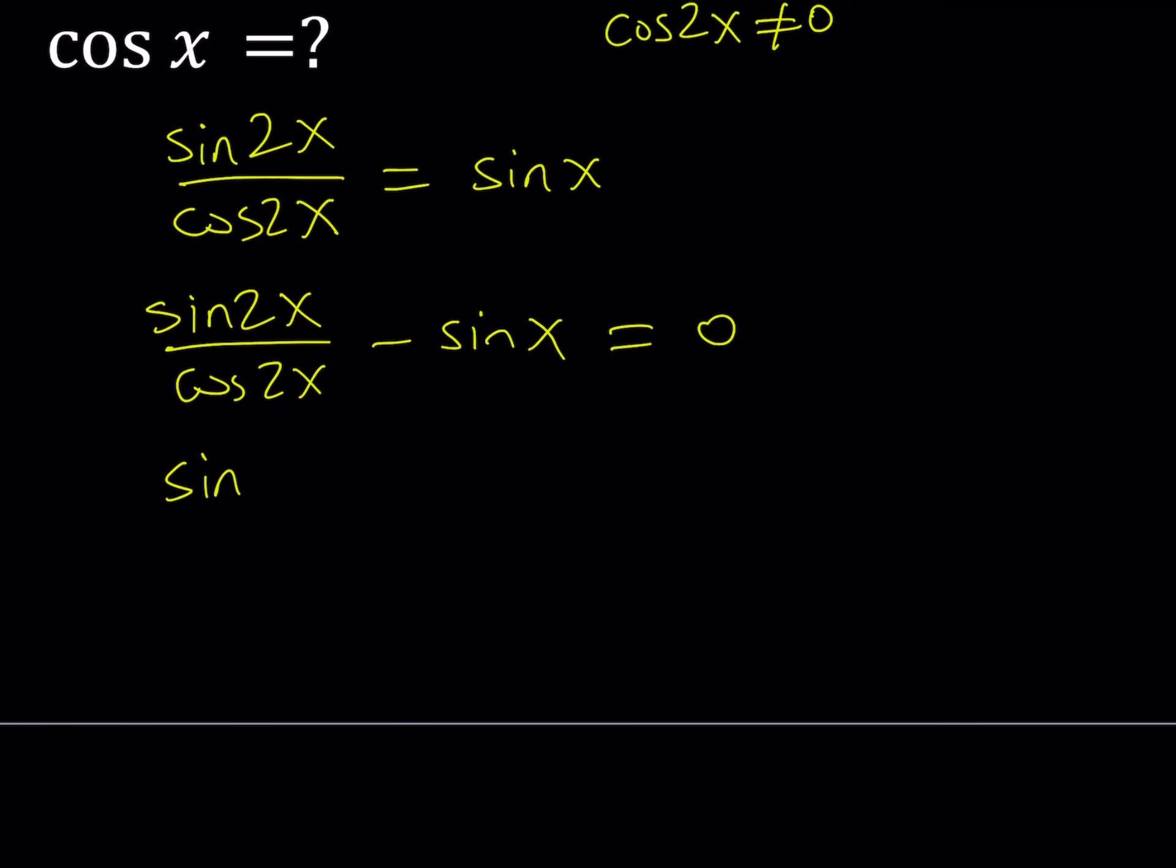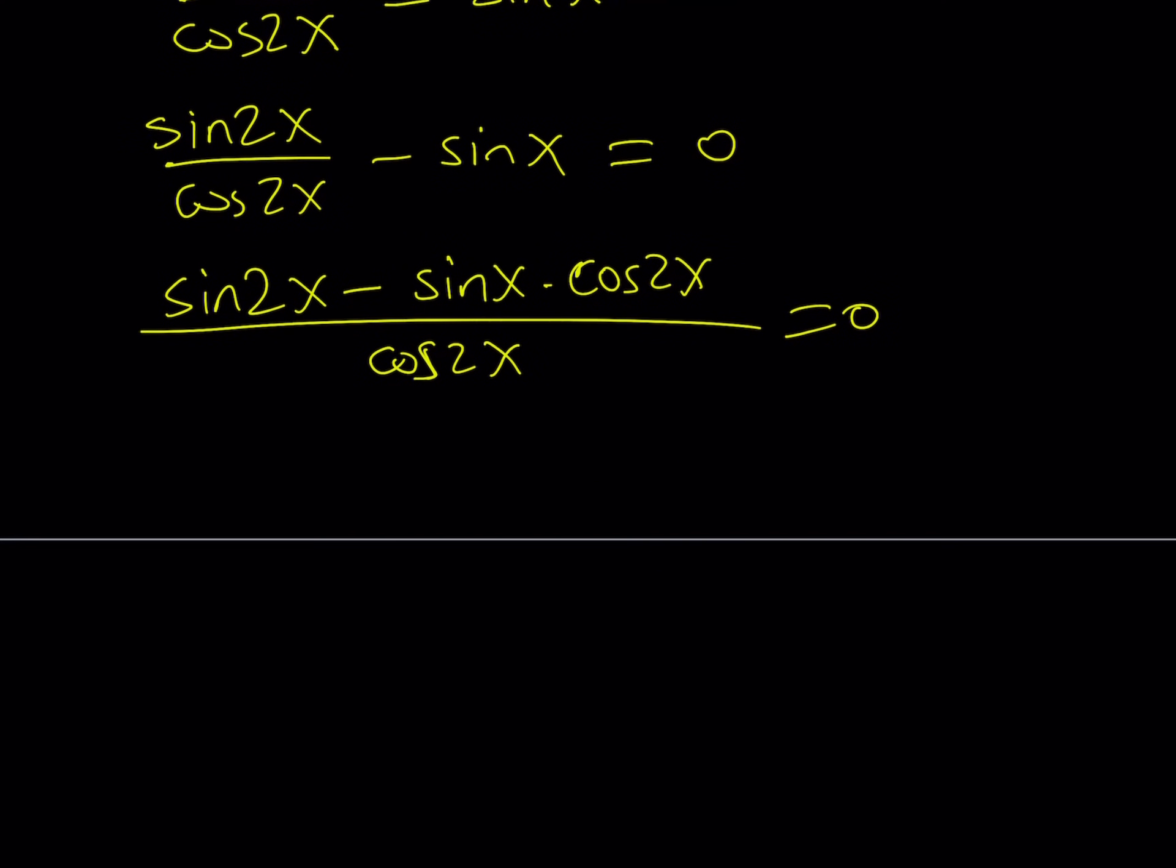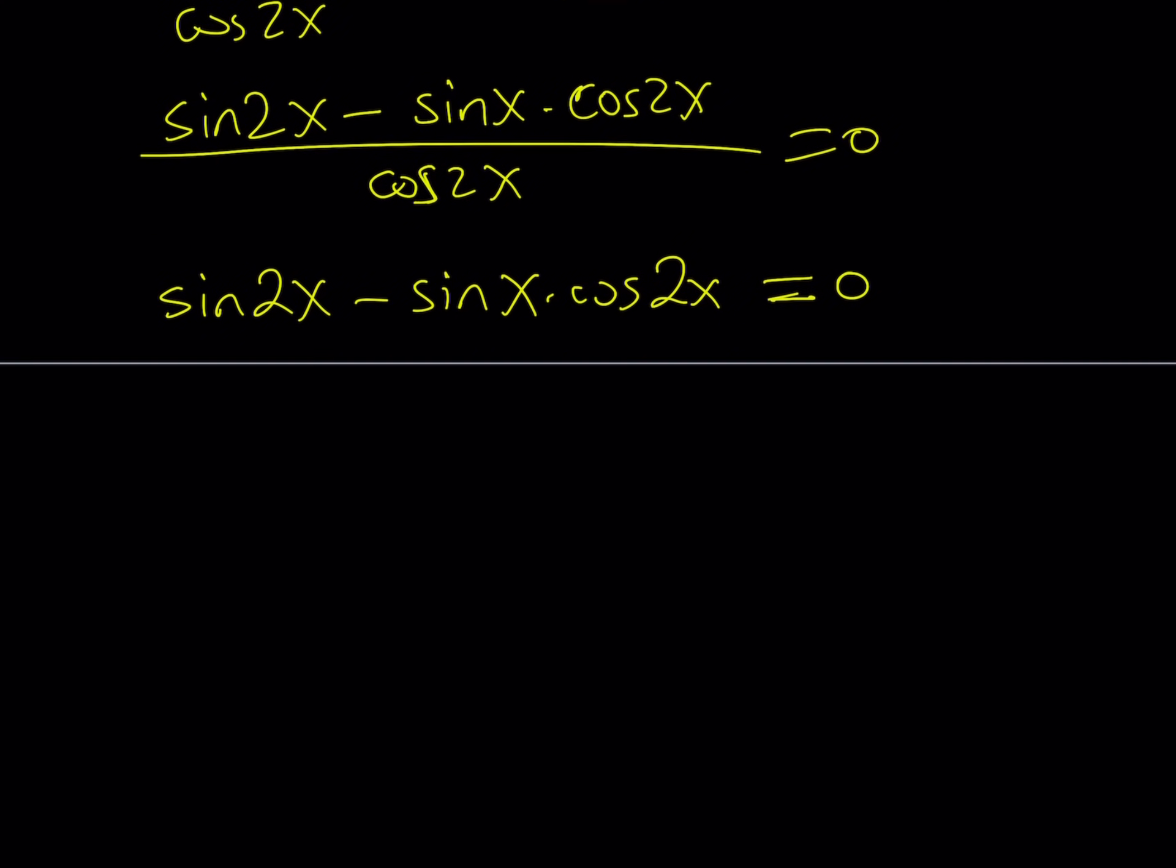Let's see how we can do it. I want to make a common denominator. If you do, you're going to get sine 2x minus sine x multiplied by cosine of 2x, and all of that is divided by cosine of 2x, and that is equal to 0. Now, at this point, I can get rid of the denominator, provided that cosine 2x does not equal 0. If it doesn't equal 0, then I can safely say that the numerator, which is sine 2x minus sine x cosine 2x, is equal to 0. Because if the numerator is 0, then the fraction is 0, as long as the denominator is not 0.